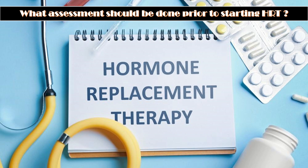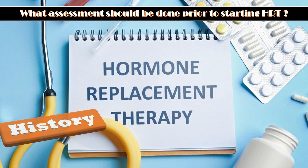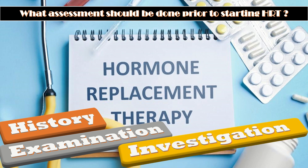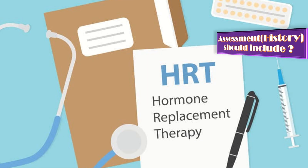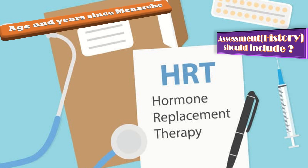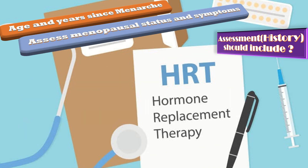What assessment should be done prior to starting HRT? We should take appropriate history, do relevant examination, and investigations before starting HRT. The history should include age and years since menopause. Current recommendations suggest that initiation of menopausal HRT has the least risk in women less than 60 years of age or less than 10 years after menopausal onset. We should also assess the menopausal state and symptoms.